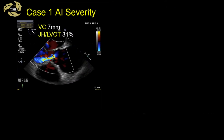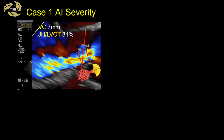When grading AI severity in this case, we look at vena contracta width and jet height to LVOT ratio. It's important to know the technical nuances when assessing these jets. Zooming in, you can see three components: the proximal flow acceleration, the narrow vena contracta, and finally the jet area. Where and when you measure can be quite variable, so spend time to zoom in and confirm all three components before measuring and quantifying AI severity.